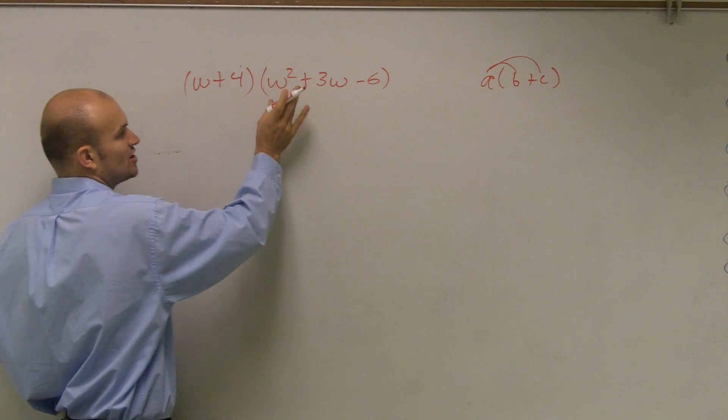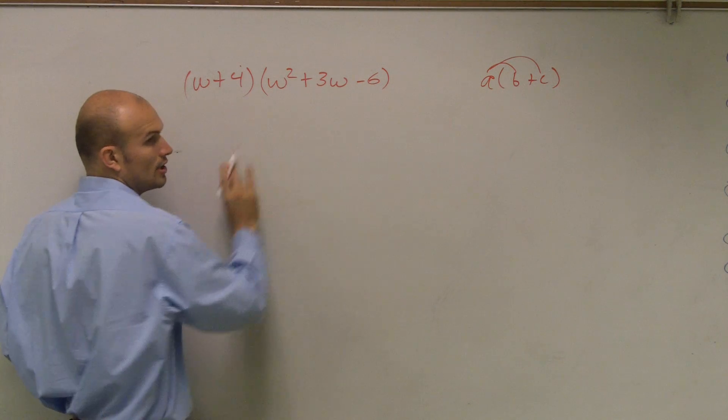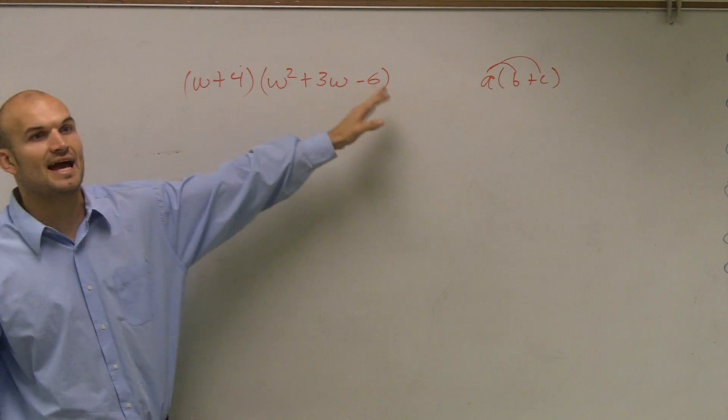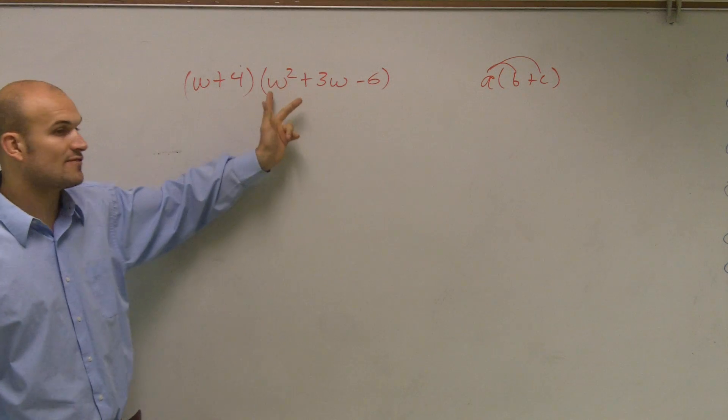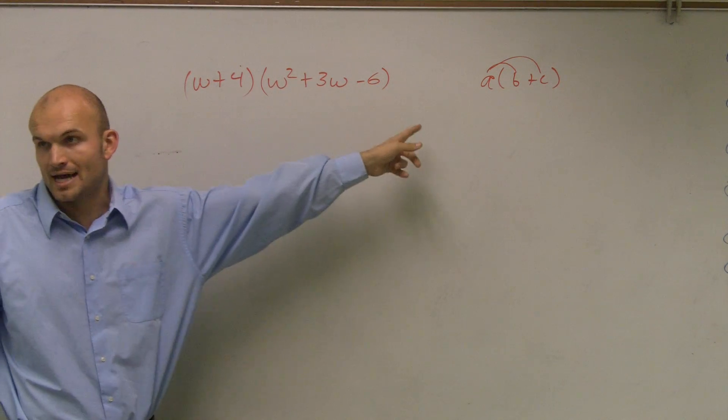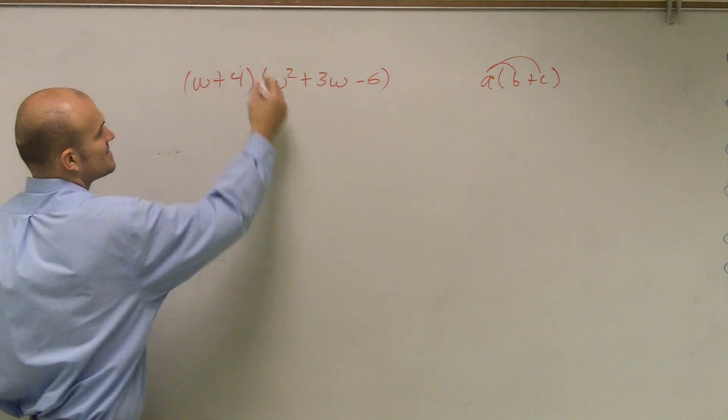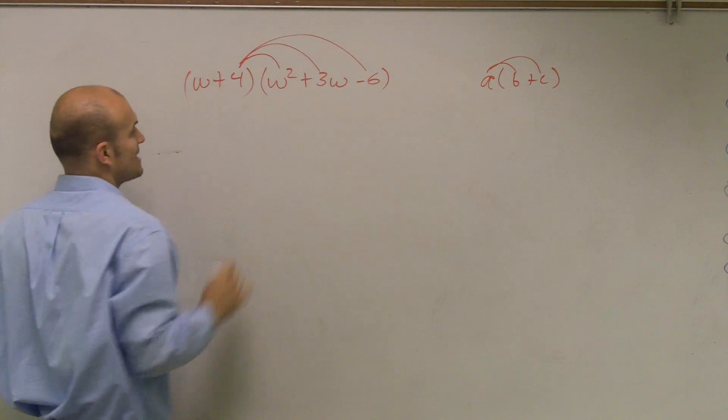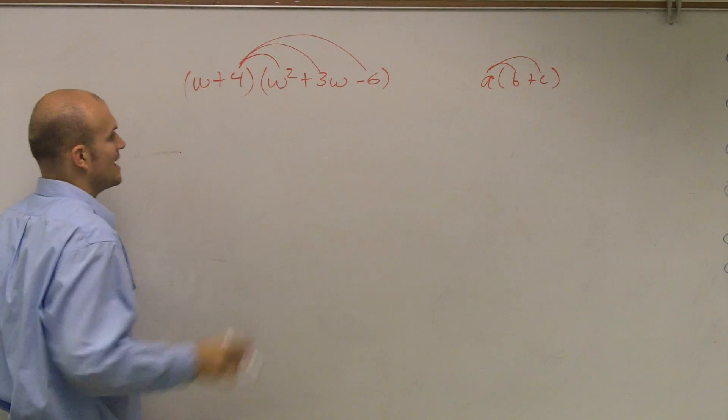this 4, I have to multiply it times every single term, alright? Because rather than just having a first and a last, we now have like a first, a middle term, and a last term. So I'm going to have to multiply this 4 times w squared, times 3w, and times negative 6. So let's do that, first of all,